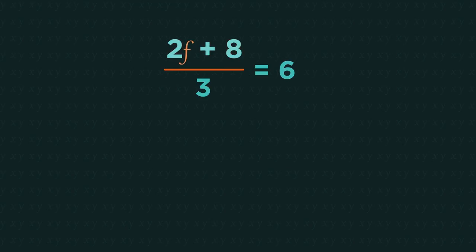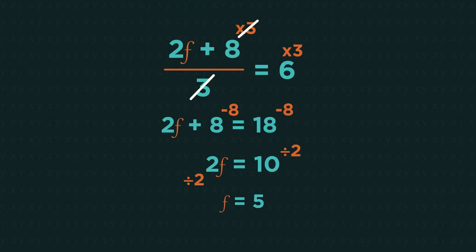The whole of 2f plus 8 has been divided by 3. We need to move this 3 first so that everything is on the same level, no denominators. So multiply both sides by 3. The times 3 and divide by 3 cancel on this side, leaving us with a simple linear equation to solve. Easy!